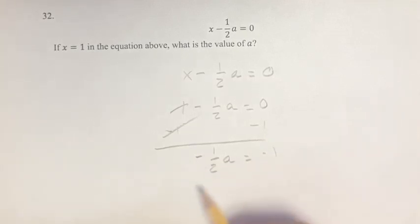Now, we want to get a on its own, so we want to multiply negative 1 half a by some number that will get rid of this coefficient and just leave us with 1 a.